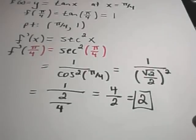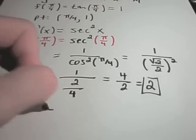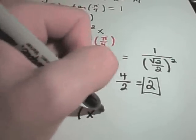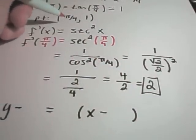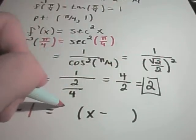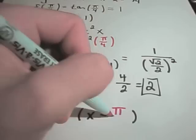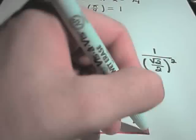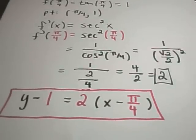Putting it all together: y minus the y-coordinate equals the slope times x minus the x-coordinate. The y-coordinate was positive 1, the slope of the tangent line was positive 2, and the x-coordinate is pi over 4. So y minus 1 equals 2 times (x minus pi over 4) is the equation of the tangent line.